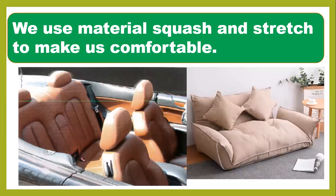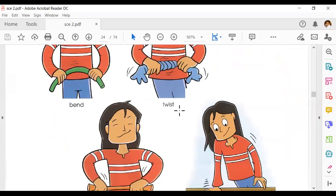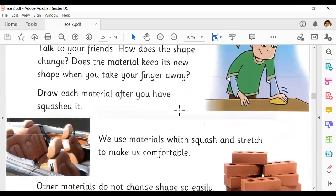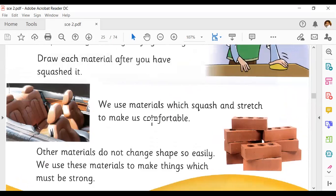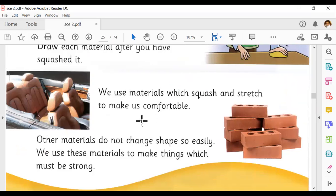On page 27 of your book, look at the four pictures we discussed today. The question is: why do we use materials that can squash and stretch? To make us comfortable. Soft materials can be changed by your hands, and we change the shapes to make us comfortable.